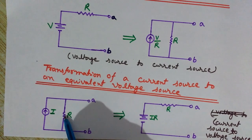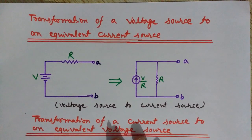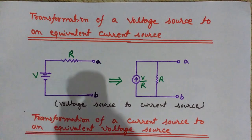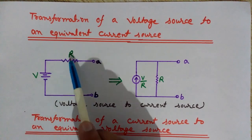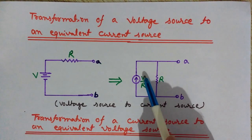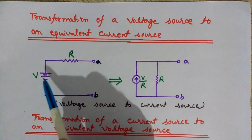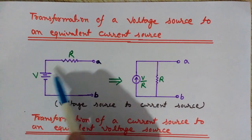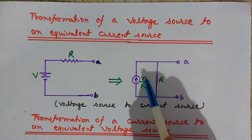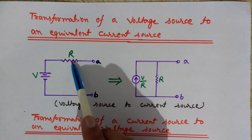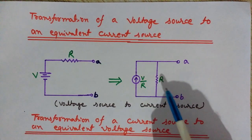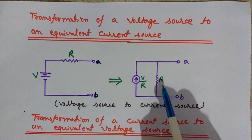Now we want to convert this voltage source into a current source. It is very simple — just divide V by R. V divided by R has units of current, so V/R is the current value of the new current source. Then take this resistance, which was in series, and place it in parallel. So V/R is the current source and the resistance is placed in parallel.